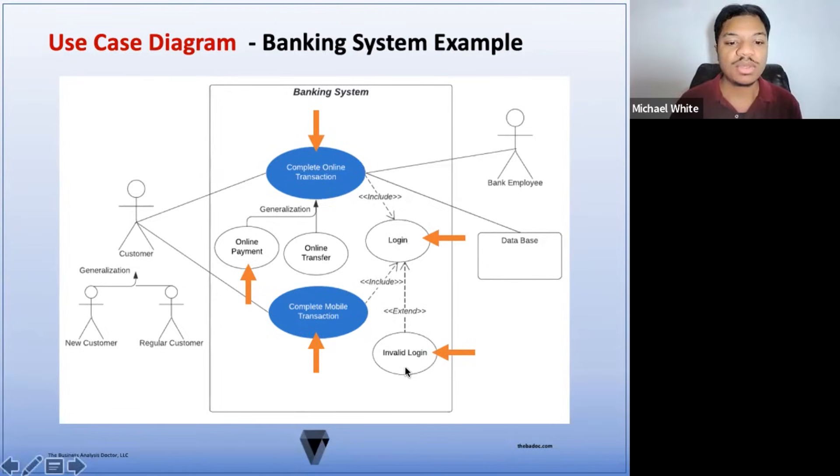Then we have our invalid login, which is an exception to the login use case. Notice we have several association lines between the actors and the base use cases. And again, we have our relationships. Here we have the include relationship, an extension relationship, as well as a generalization relationship. We also have a generalization relationship between the actors. So now that you know the components of a use case and how to interpret it, let's look at some best practices.